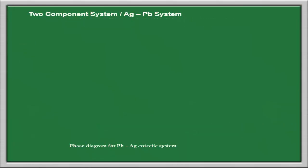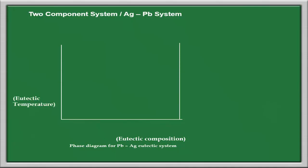Let us understand the phase diagram for the silver-lead system. On the x-axis there is eutectic composition, and on the y-axis there is eutectic temperature. On the left-hand side we have 100% silver and 0% lead; on the right-hand side we have 100% lead and 0% silver. Going from left to right, the percentage of silver decreases and the percentage of lead increases. The diagram contains two curves: curve AO and curve BO.